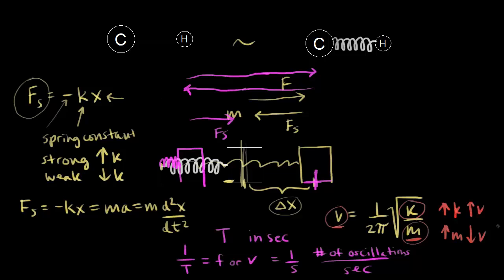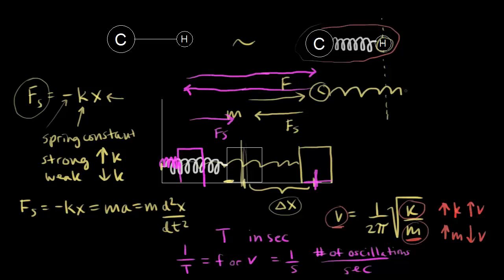This is what we're thinking about when treating the bond as a spring. Keeping the carbon stationary, we pull on the hydrogen to the right, stretching the spring. The hydrogen feels a restoring force back toward the left. If you have a really strong bond, that means an increased value for k — a stronger bond means a stronger spring constant — so you get an increased frequency of oscillation.